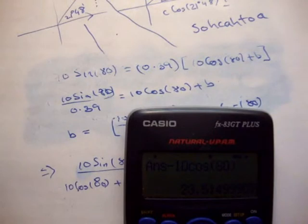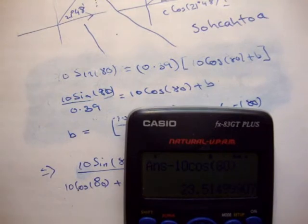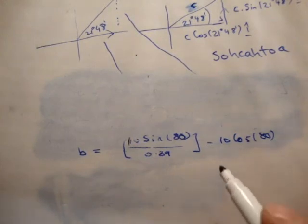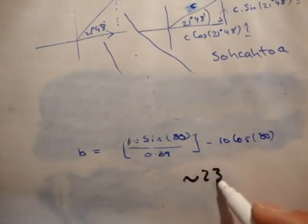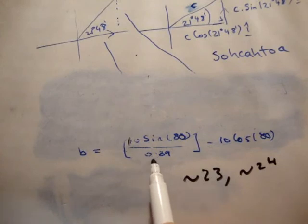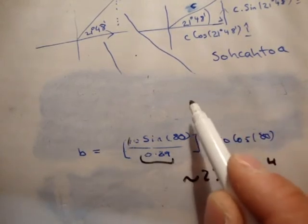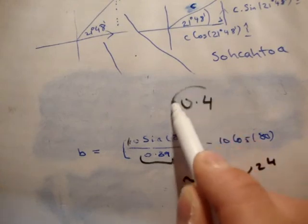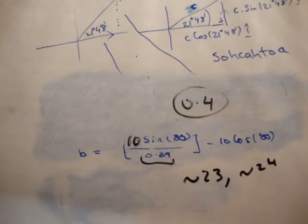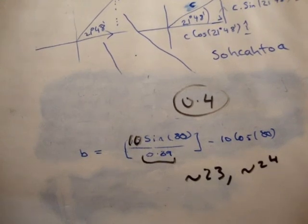Checking at the back of the book, the answer is 22.88. The reason for the discrepancy is that I divided by 0.39, whereas the book solution divided by 0.4. When you divide 10 times sine of 80 by 0.4, you get the answer in the back of the book. It's just to do with the number of significant figures. Please subscribe to my channel and pass this video on. Thanks for watching.